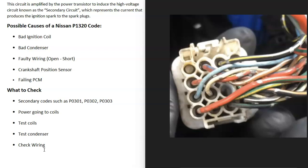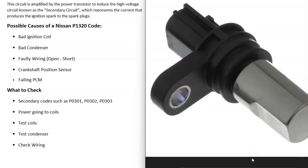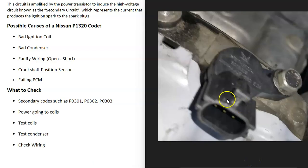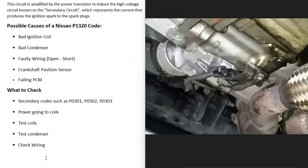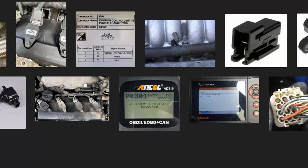You can also test the crankshaft position sensor. Its exact location varies but it's generally found on the lower part of the engine. While a failing crankshaft position sensor usually generates other codes, it is still worth checking as a potential cause of the P1320.